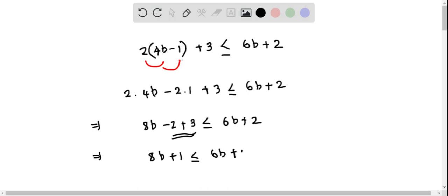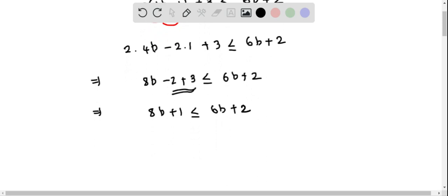Now I want to have only the 8b on the left side, which means I can subtract 1 from both sides. So when I do that, I'll be left with only 8b on the left side, less than or equal to 6b, and 2 minus 1 is 1.